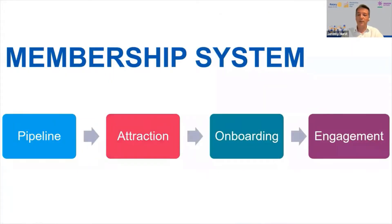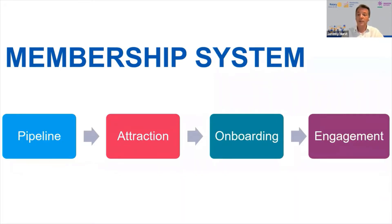To give you the big picture, this membership system addresses the four areas that impact growth. Experience has shown that growth is only achievable at the club level if we focus on each of these four areas. The first is the prospect pipeline — the focus of today's session — asking whether you are consistently generating enough prospective members and showing you how. Attraction poses the question: are we making a successful case to our prospects about what is important to them?